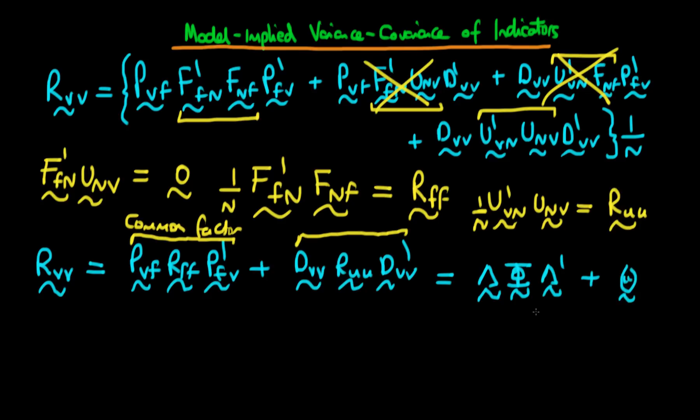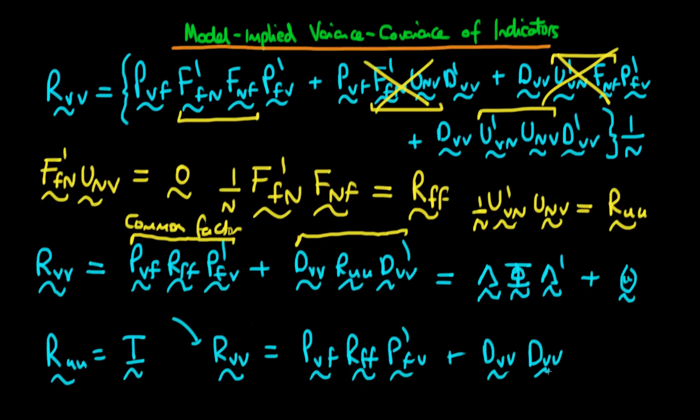And in the circumstance where the unique factors are uncorrelated with each other, we then have a statement that essentially R U U is equal to the identity matrix. So it's just a matrix which has just got ones down its diagonal. In that circumstance, we then find that R V V collapses to being equal to P V F times R F F times P primed F V plus finally D V V times D V V primed.